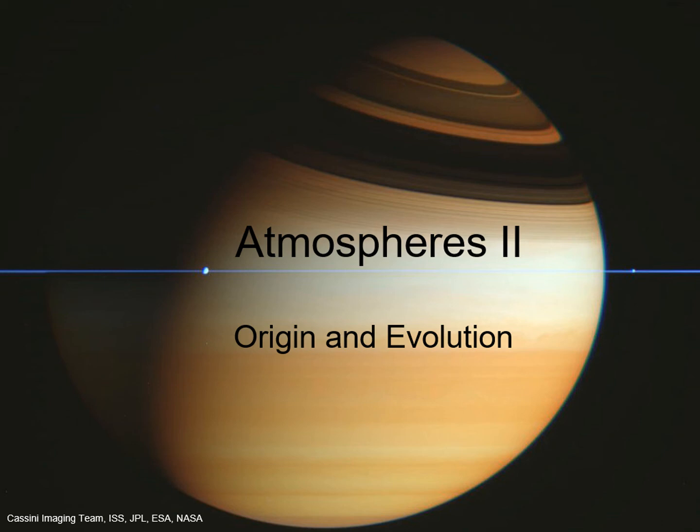So far, we've mainly been focusing on the forces that affect an atmosphere in the short term. But now we need to look at long-term effects. How does an atmosphere form? How does it change over time? And how does it disappear? These will help us understand why some planets have an atmosphere and some don't, as well as why these atmospheres are so different from each other.